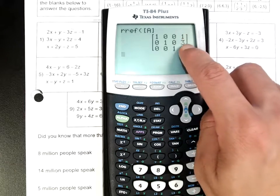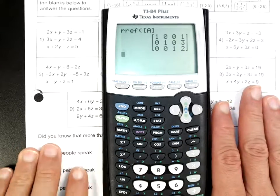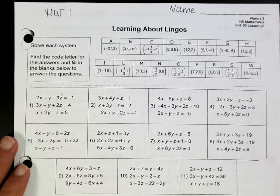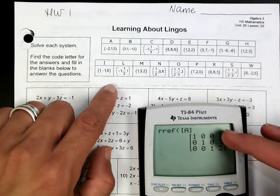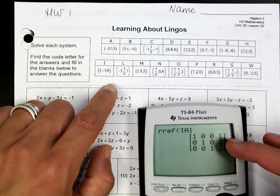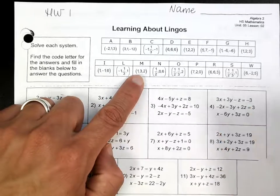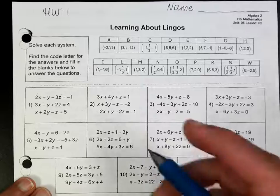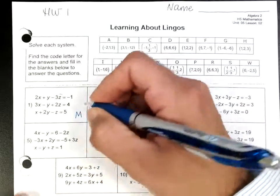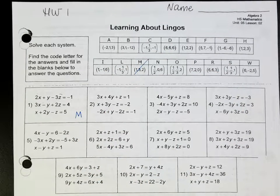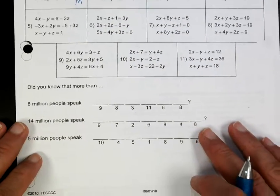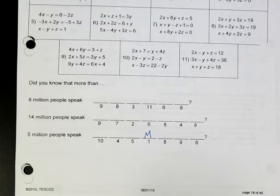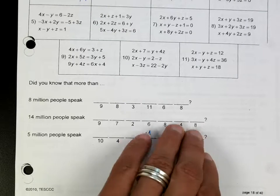The answer is 1, 3, 2 — so x is 1, y is 3, z is 2. Looking at the answer choices, this corresponds to M. That's what goes here, and that's what you have to put everywhere you see a one. If you do it like this for all of these, you're going to find out the answer for each one.